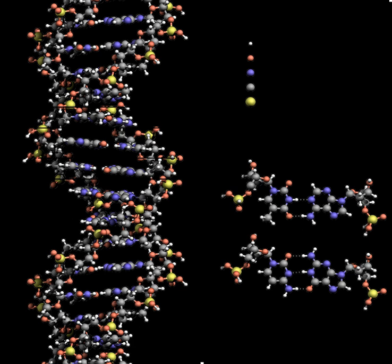RNA strands are created using DNA strands as a template in a process called transcription. Under the genetic code, these RNA strands specify the sequence of amino acids within proteins in a process called translation.